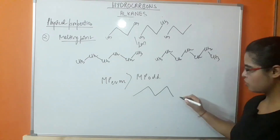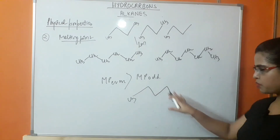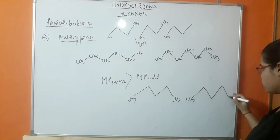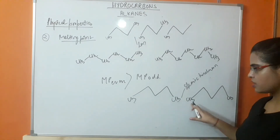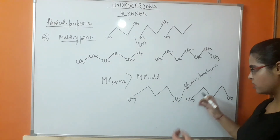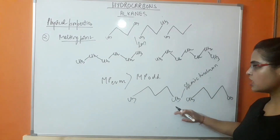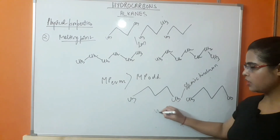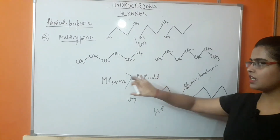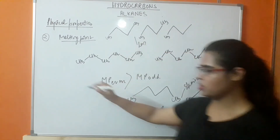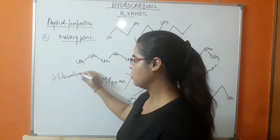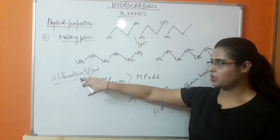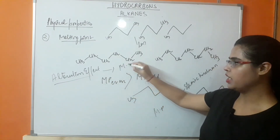In odd number of carbons, such as pentane, the terminal methyl groups of adjacent molecules are in the same direction, causing steric hindrance between them. Because they are very near to each other and in the same direction, the packing of odd number of alkanes is less efficient. Therefore, the melting point of odd number alkanes is less compared to even number. This effect is known as the alternation effect, which affects the melting point of alkanes.